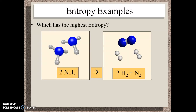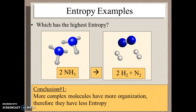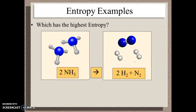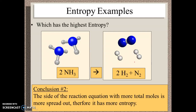Next, go ahead and tell me who has the highest entropy. There are two ways to look at this. First, complex molecules are highly organized while simpler molecules are more disorganized — so more complex molecules have less entropy. Additionally, the side of the equation with more total moles is more spread out; therefore the side with more moles is going to have more entropy than the other side.